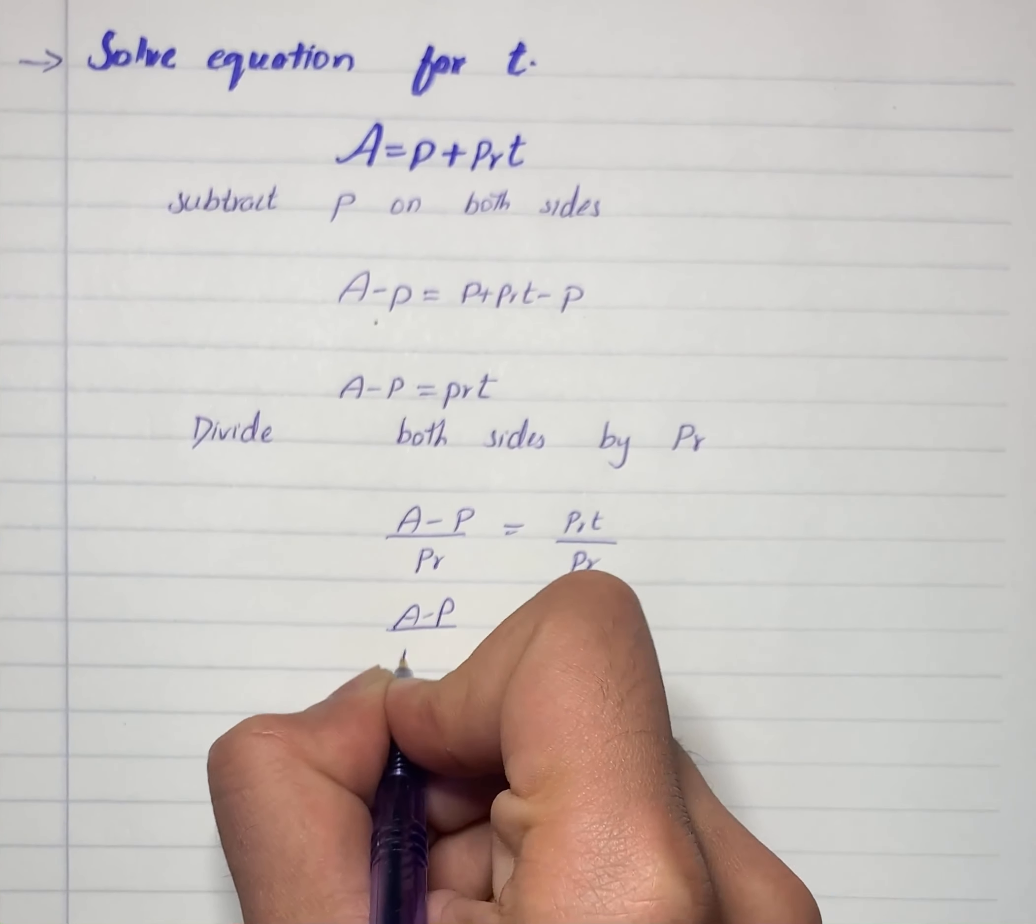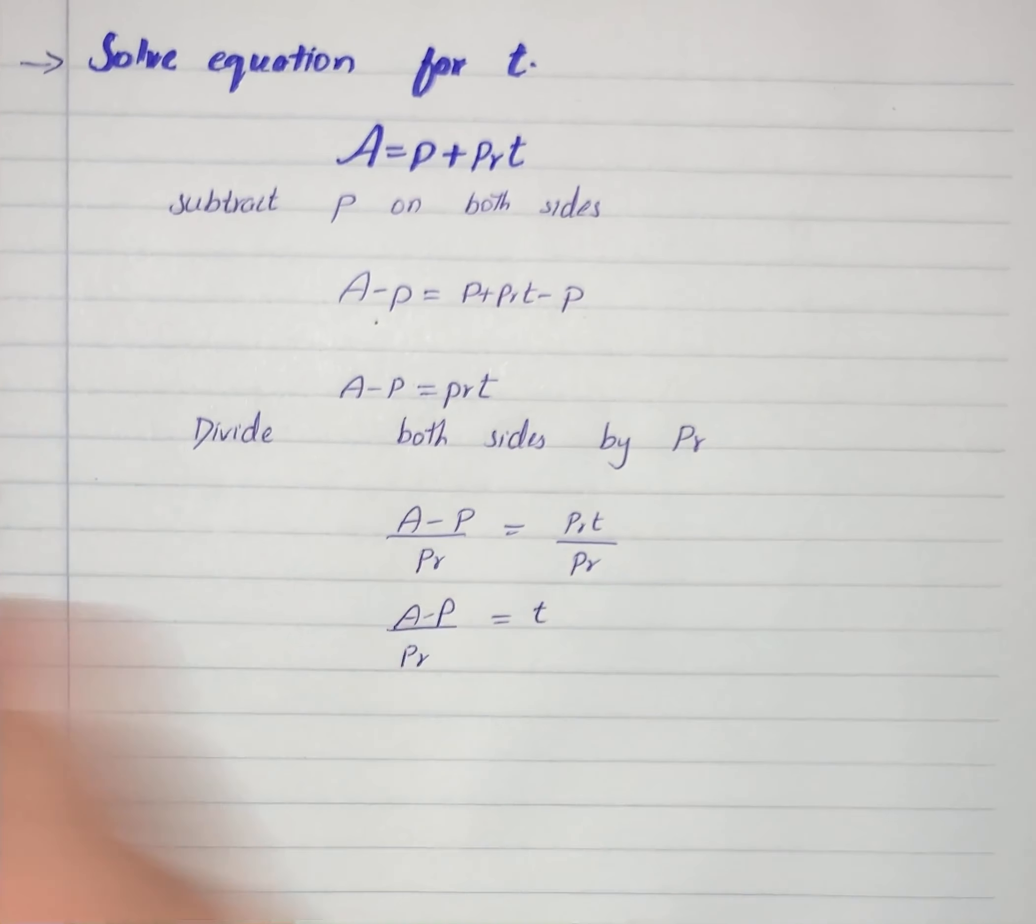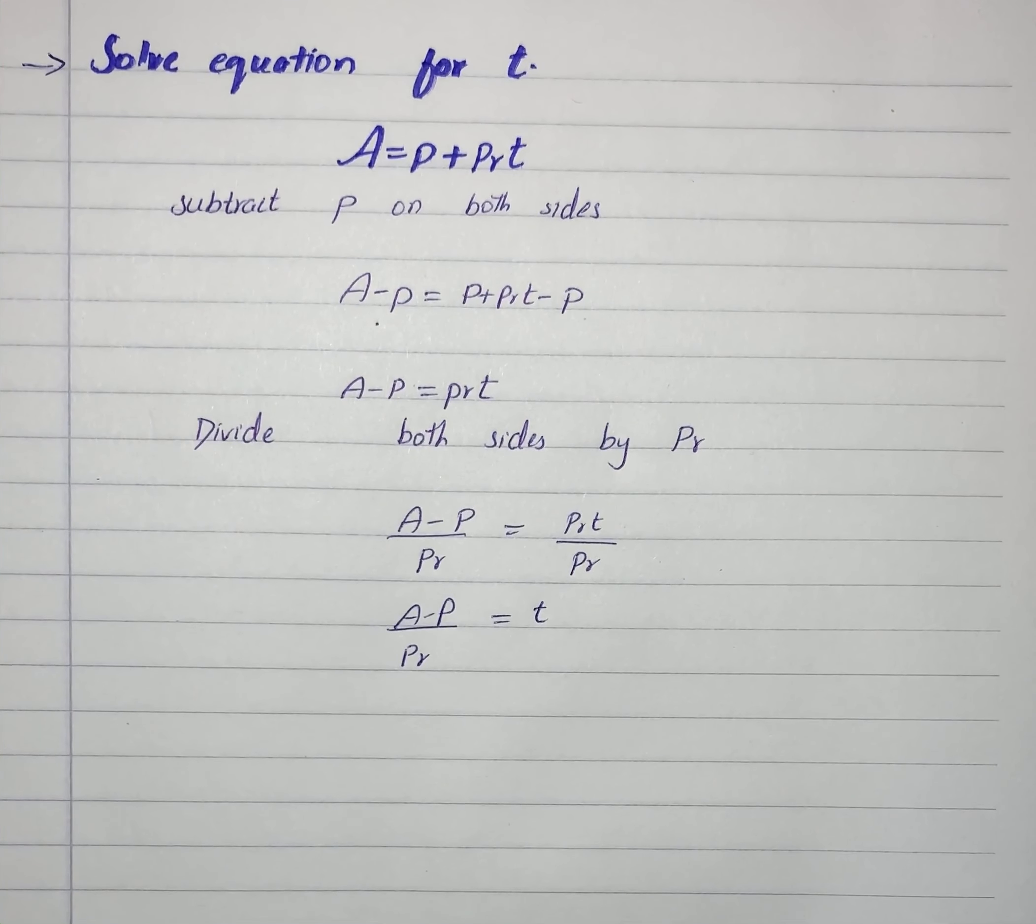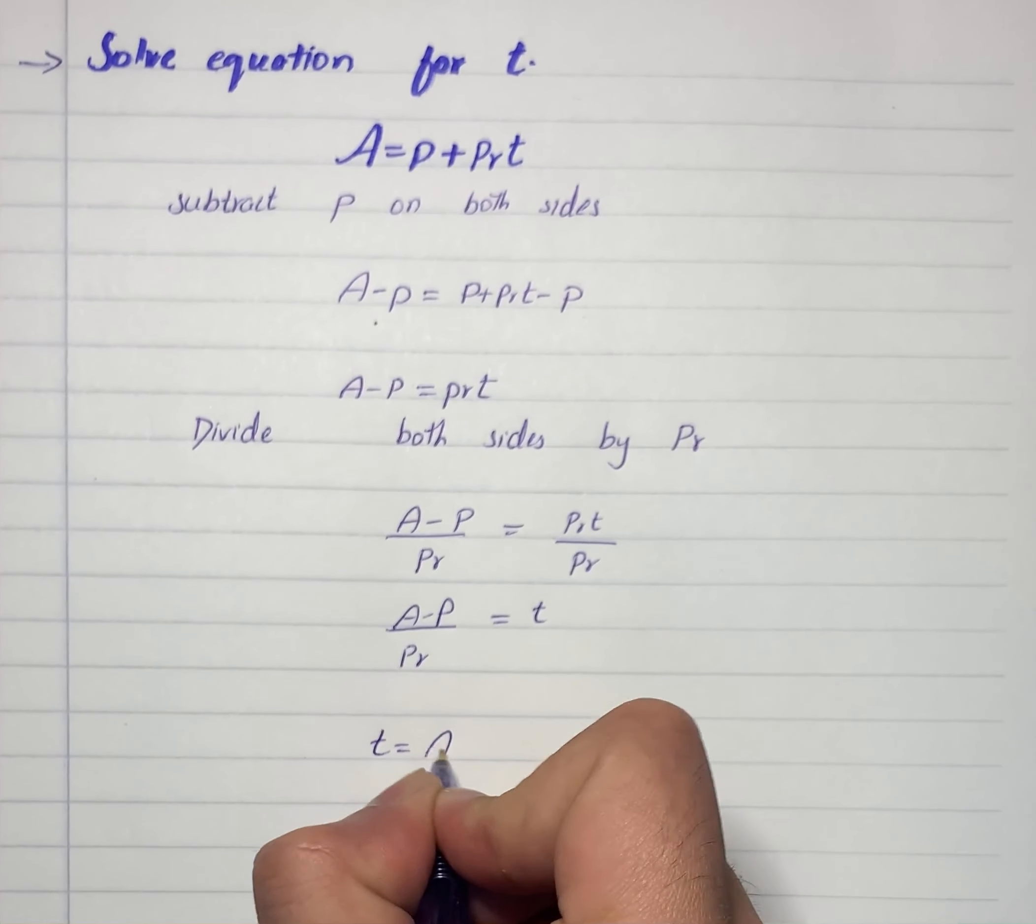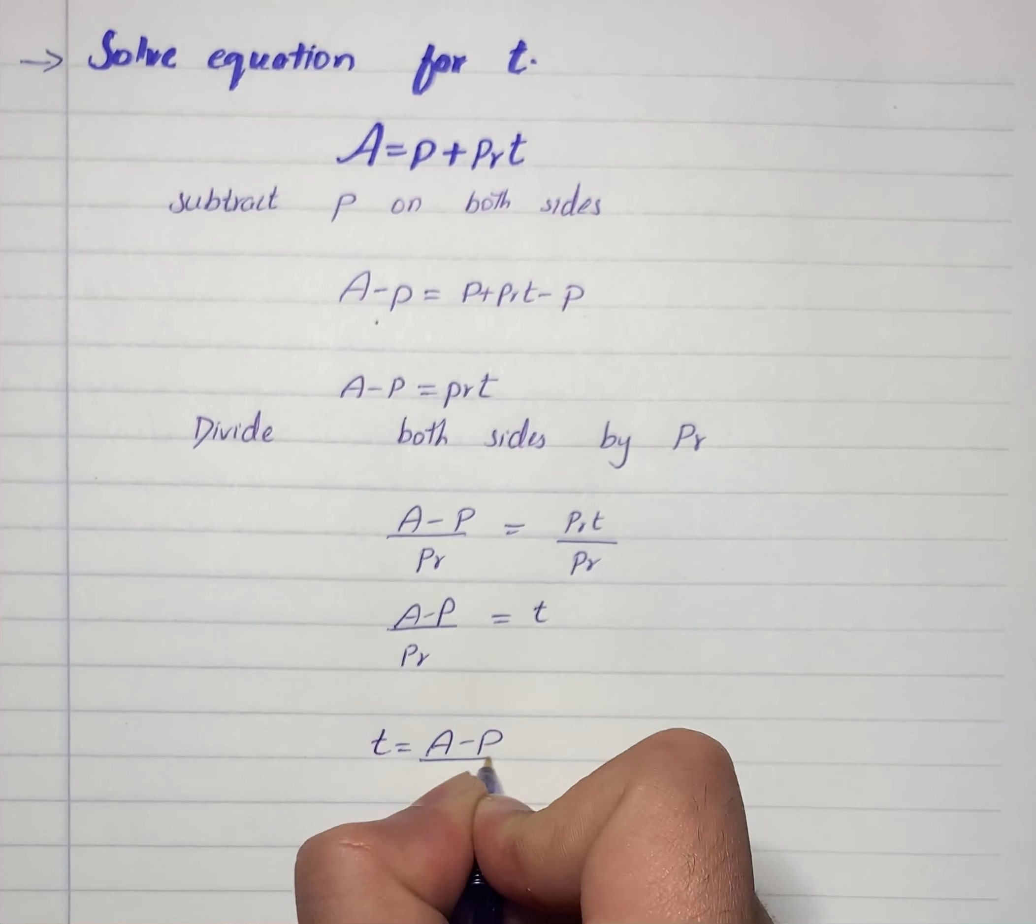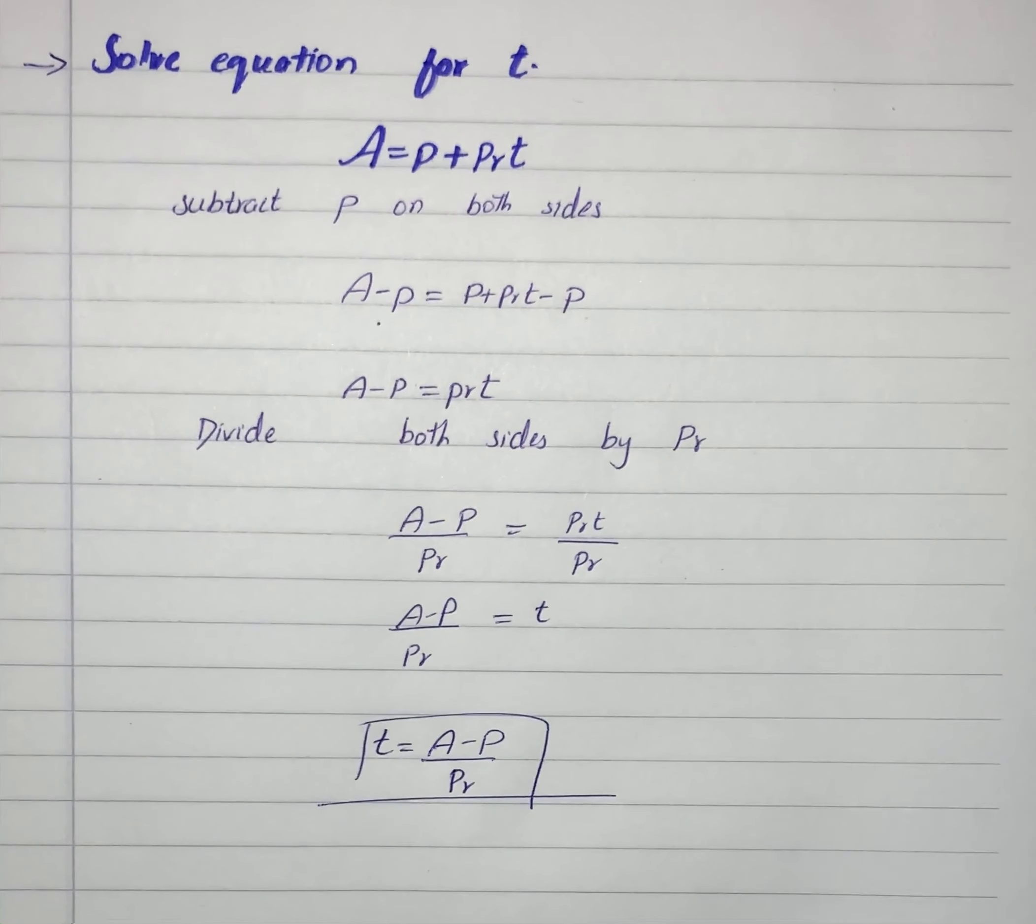Or we can write it as T equals A minus P over PR. So here is our solution for T.